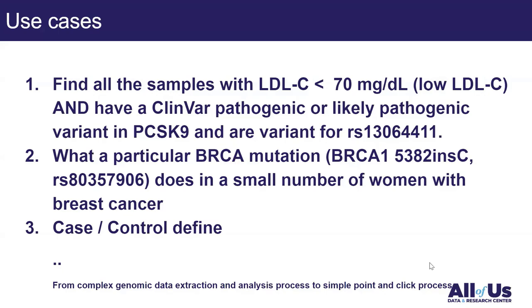With the new feature, you can do all of this in one place and get results very quickly. The second use case involves a particular BRCA1 mutation — a specific insertion in a position with a given RSID — found in a small number of women with breast cancer. In this case, we want to extract females who have breast cancer and carry a particular mutation at that SNP.